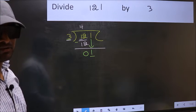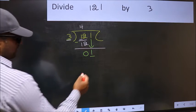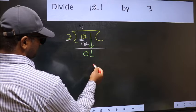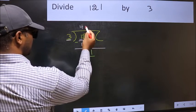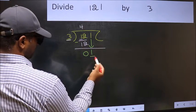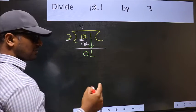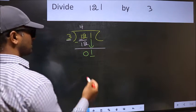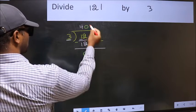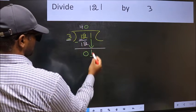what you should think of is, what number should be right here. If I take 1 here, I will get 3. But, 3 is larger than 1. So, what we should do is, we should take 0. So, 3 into 0, 0.